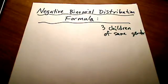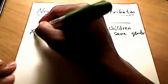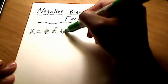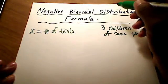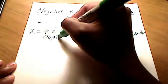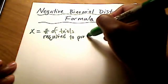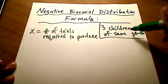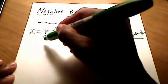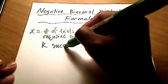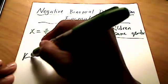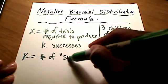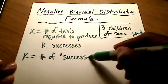A couple of things to explain first. We're going to let x equal the number of trials that are required to produce — in our case, to attain three children. So x represents the number of trials needed to produce k successes. K is the number of whatever is defined as a success — the number of successes.